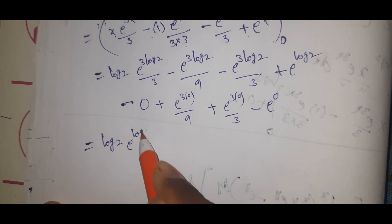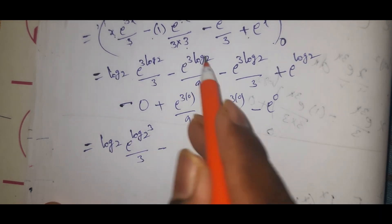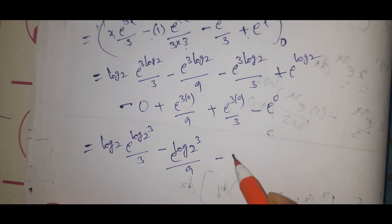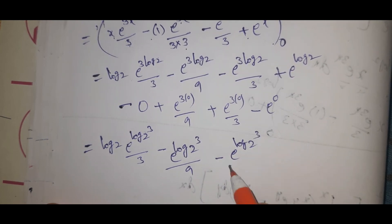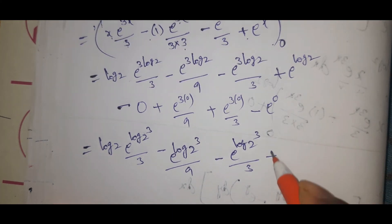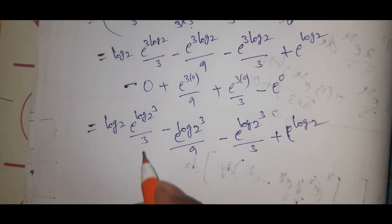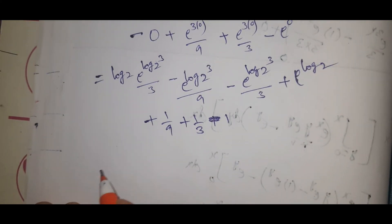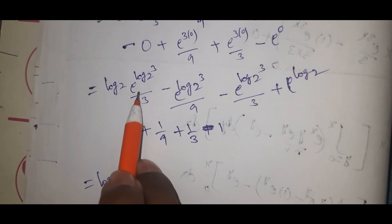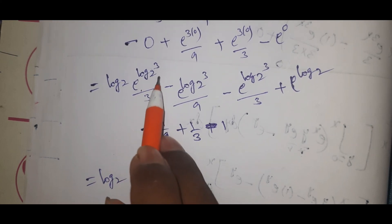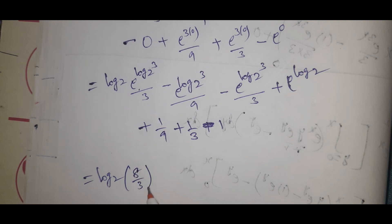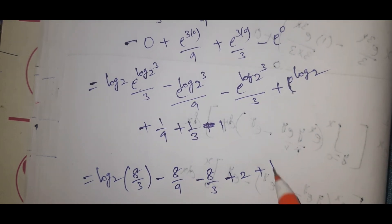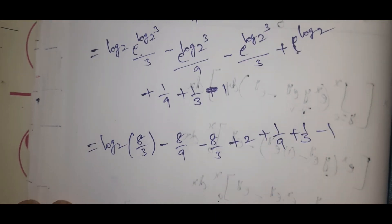That gives log 2 times e to the power (log 2 cubed) divided by 3, minus e to the power (log 2 cubed) divided by 9, minus e to the power (log 2 cubed) divided by 3, plus e to the power log 2. Then subtracting the lower limit at x = 0 gives plus 1 by 9, plus 1 by 3, minus 1. That equals: 8 by 3 log 2, minus 8 by 9, minus 8 by 3, plus 2, plus 1 by 9, plus 1, minus 1.